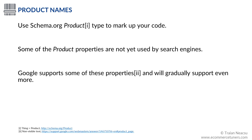Use the schema product type to mark up your code with product names, brands, manufacturers, images, and a lot of other product properties. Many product properties are not yet used by search engines, but as long as you keep product attributes in your database, it won't be much of a hassle to mark up your HTML code at a later date. Google supports some of these properties and will gradually support even more. Currently, the preferred way to mark up the content is JSON-LD.